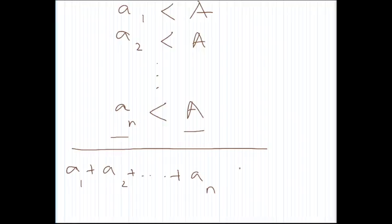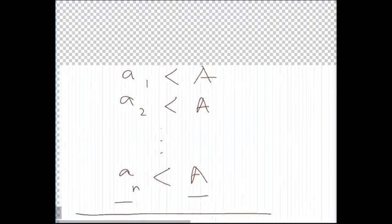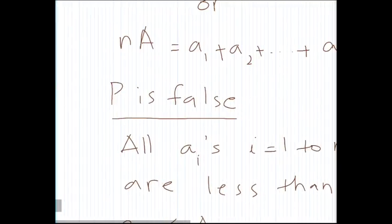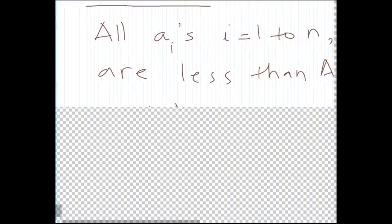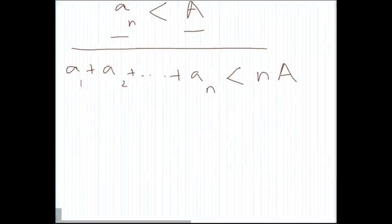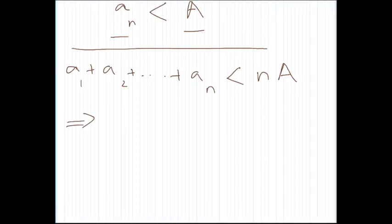an is less than n times A. But what we saw earlier, that this sum should be equal to n times A. So this means something, you know, so the definition of average